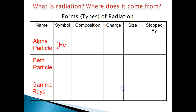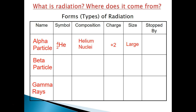Alpha particles use the symbol for helium, with a mass number of 4 and an atomic number of 2. The composition of an alpha particle is the nucleus of a helium atom — two protons and two neutrons without the electrons. That gives the alpha particle a charge of +2. As far as radiation goes, it's rather large, and alpha particles are so large they can be stopped by air.